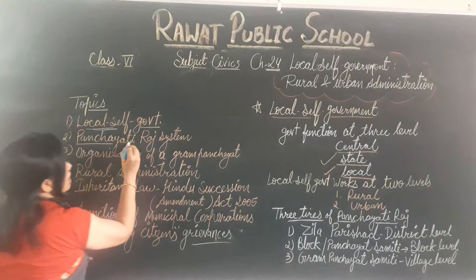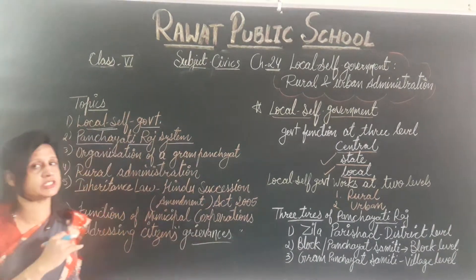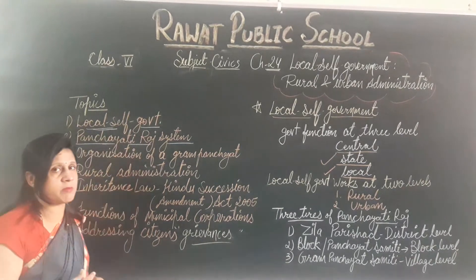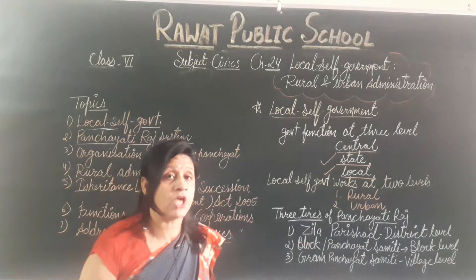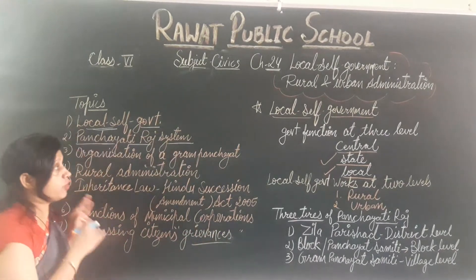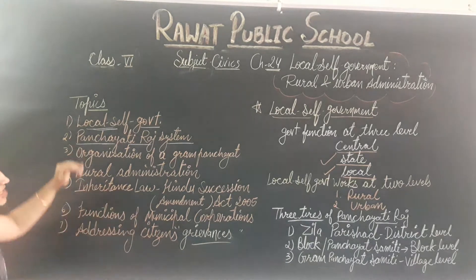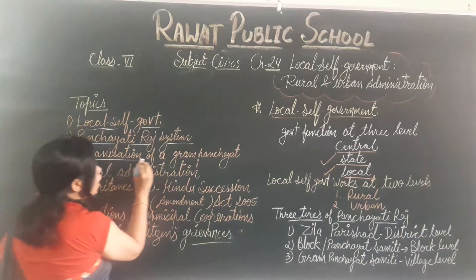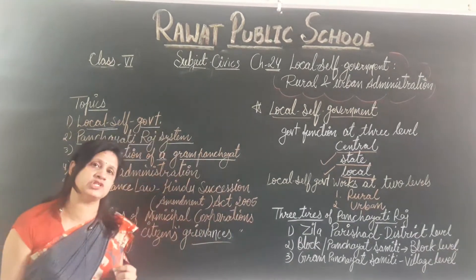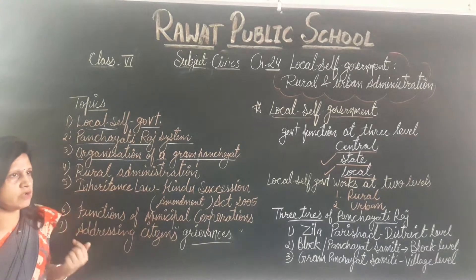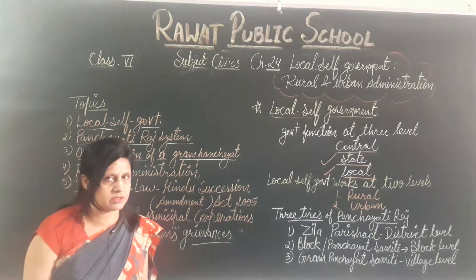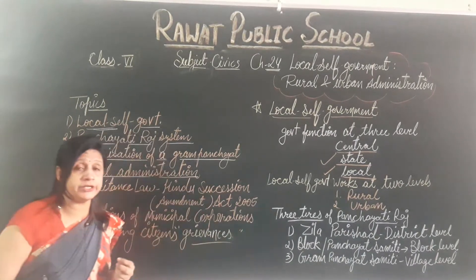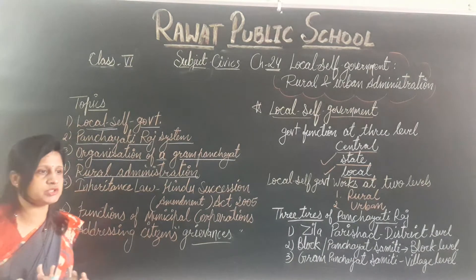The second thing we will discuss about is the Panchayati Raj system. Panchayati Raj system — how it works, how it is formed, what is the work of the Panchayat, and what are its parts. So Panchayati Raj is the second point of your chapter. The third point is Organizations of the Gram Panchayat, in which we will discuss Gram Sabha and Gram Panchayat.